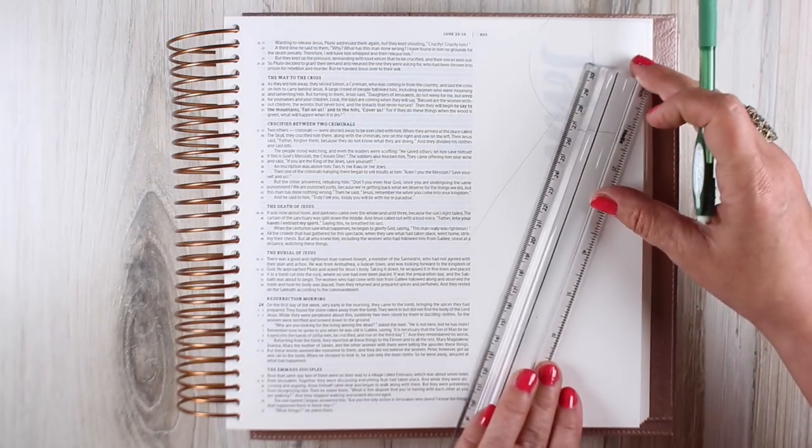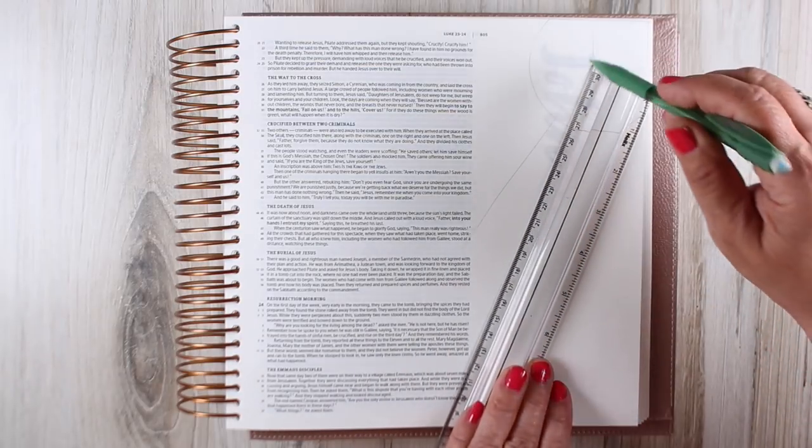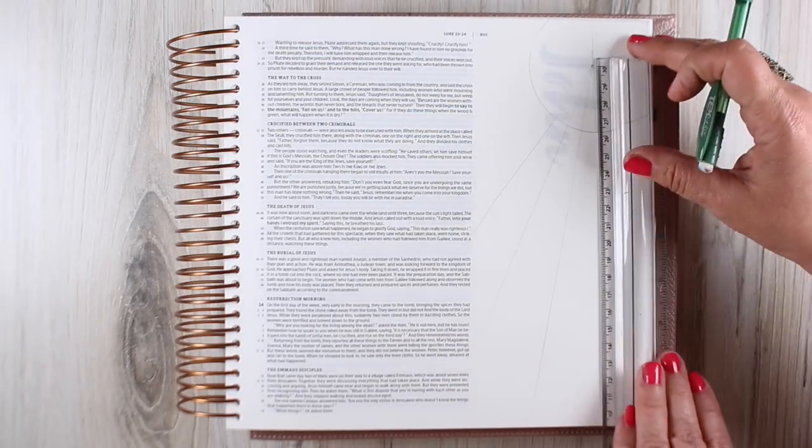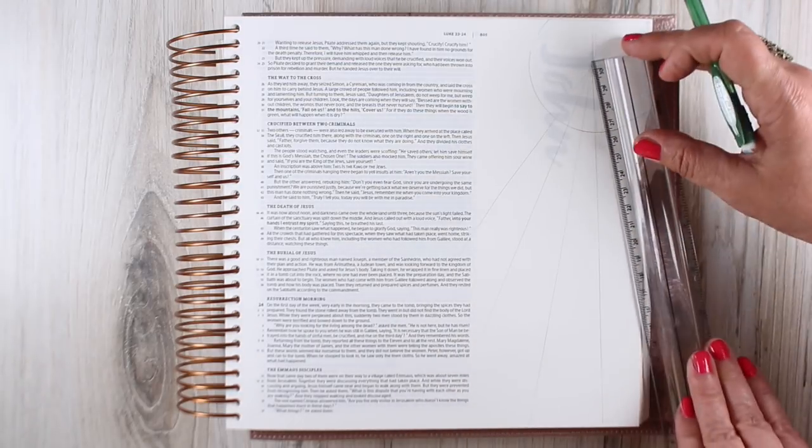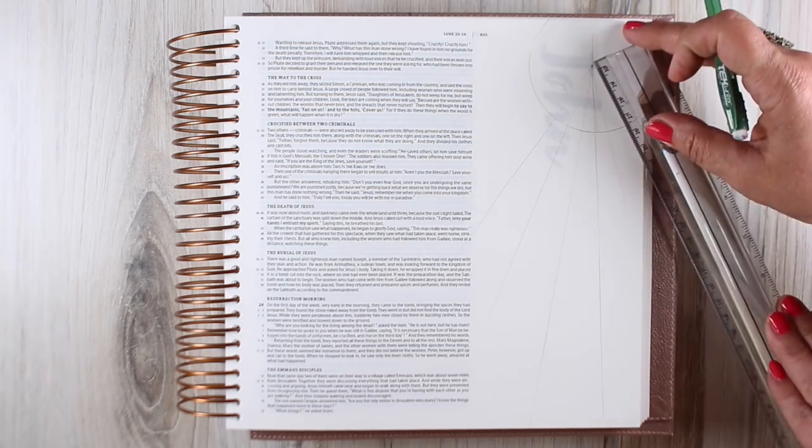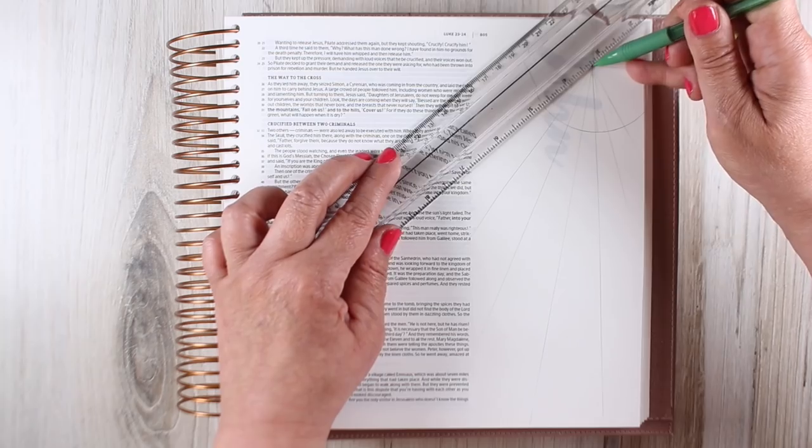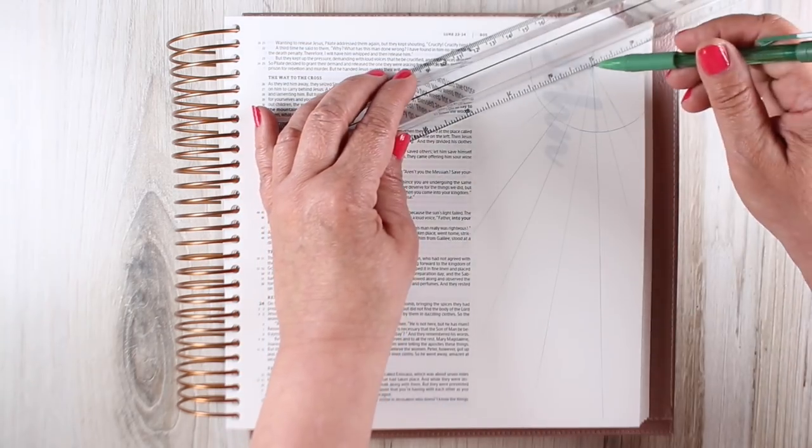I'm using the Illustrating Bible—this is the one that's 12 by 12 and has a large place to work with on the right. You can do this same kind of thing in a smaller margin Bible as well or a full page depending on what kind of Bible you've got.